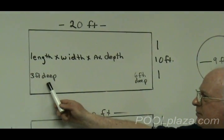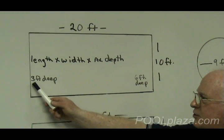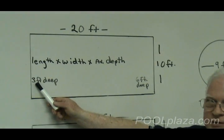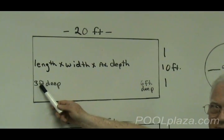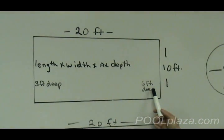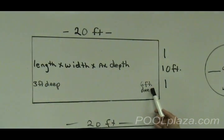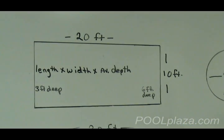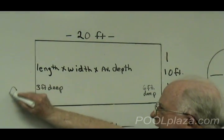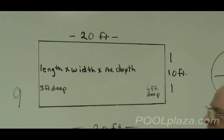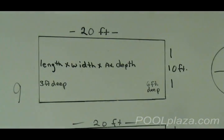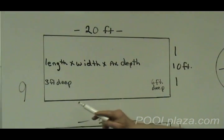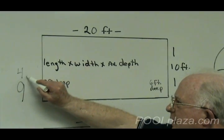Figuring the average depth, take the shallow end in this pool, it's 3 feet minimum, the deep end is 6 feet maximum, add these two numbers together, that gives you 9, and divide it in half. So the average depth of this pool is 4.5.